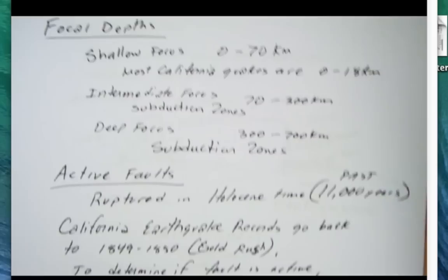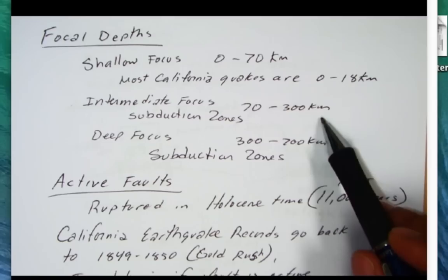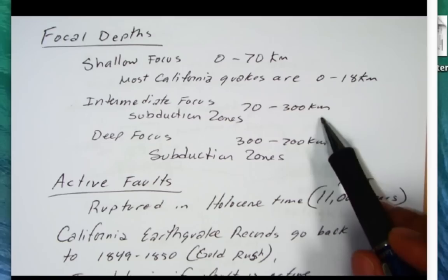Saying a little bit more about the focus, there are basically three focal depths. Shallow focus, which is 0 to 70 kilometers, intermediate focus, 70 to 300 kilometers, and deep focus earthquakes, which are 300 to 700 kilometers.